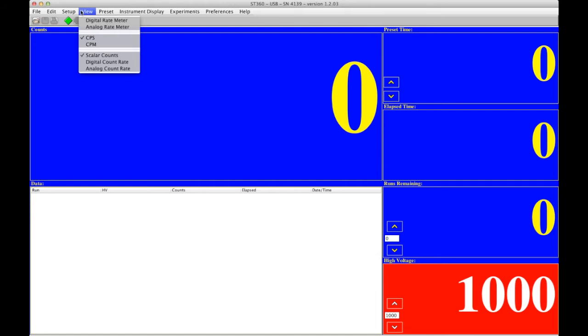You can view the digital rate meter analog. We have CPS, CPM. And in the left-hand corner, we can view scalar counts, digital count rate, or analog count rate. And we'll test that out right now.